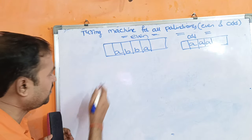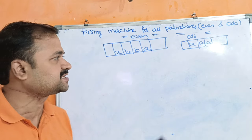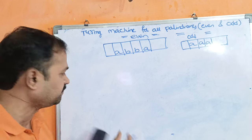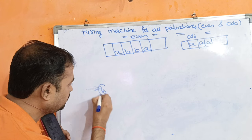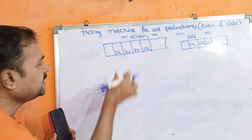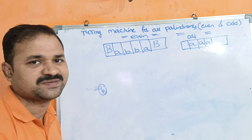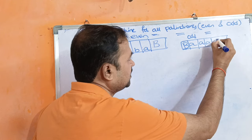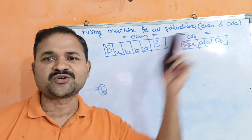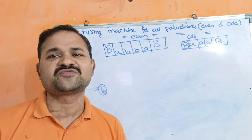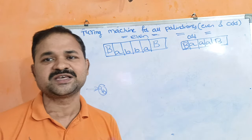Let us design first for even palindromes, then we will make changes to handle all palindromes. Before the string we can have any number of blank symbols, and after the string we can also have any number of blank symbols. So for all strings, this Turing machine can accept all those cases.